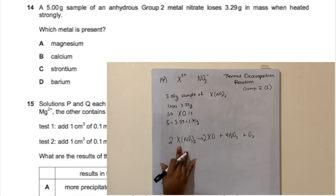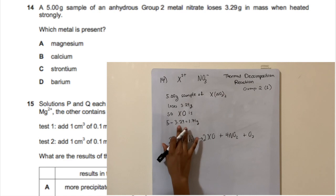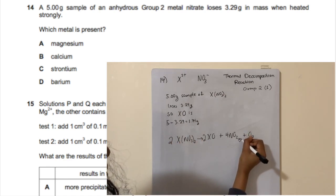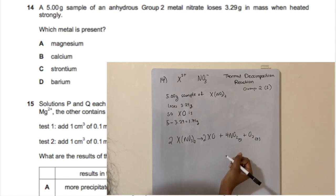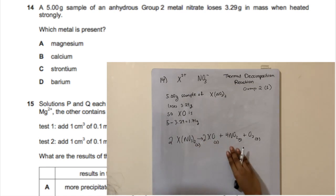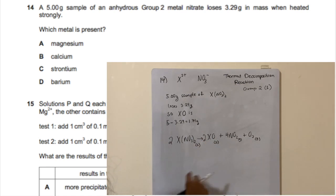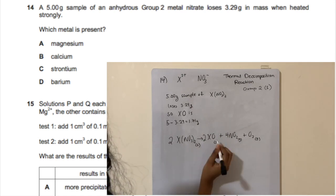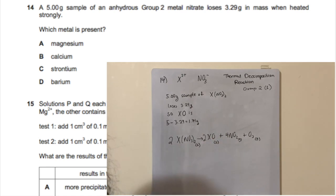The 5-gram sample loses 3.29 grams because the products NO₂ and O₂ are gases that fly off the reaction vessel, leaving 1.71 grams of solid metal oxide.